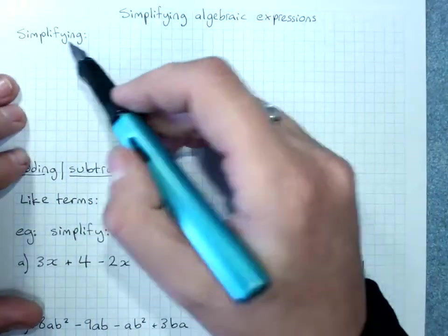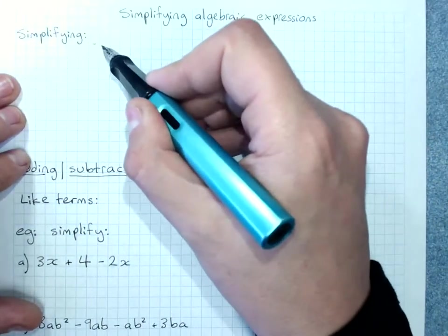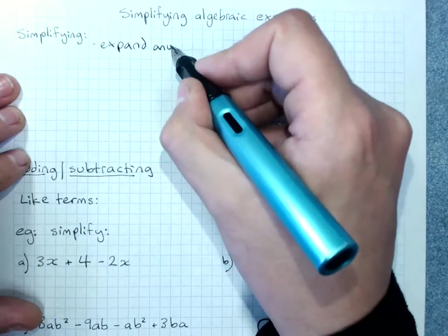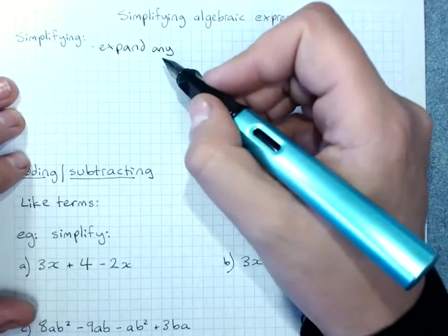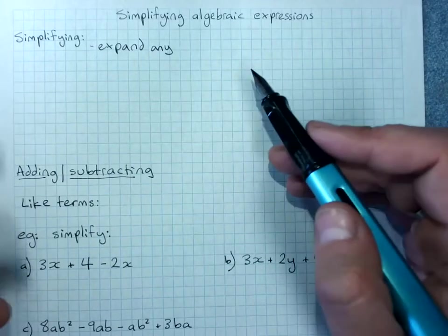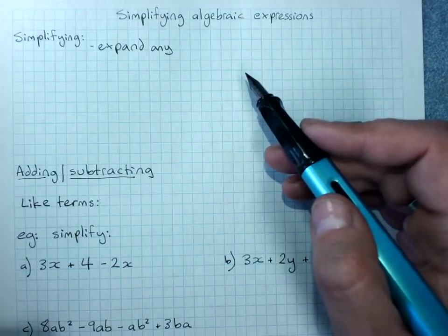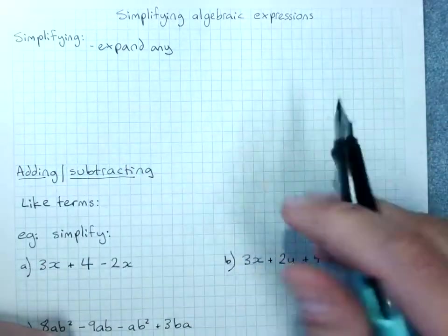Now what simplifying will mean then is expand any brackets. This isn't always the best thing to do because sometimes it's really useful to have the brackets there, and this will show you why much later on.